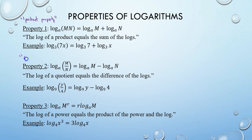Property 2 is often referred to as the quotient property. It tells you what to do when you have division within a log — you turn division into subtraction of individual logs. The log of a quotient equals the difference of the logs. So log base 9 of y over 4 equals log base 9 of y minus log base 9 of 4.